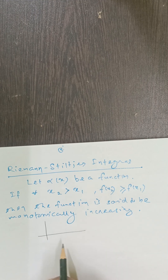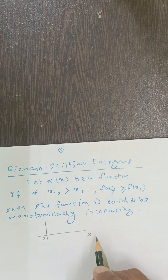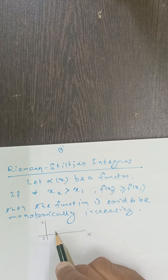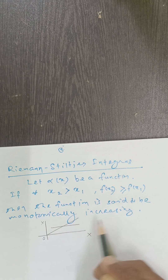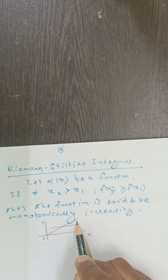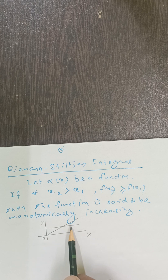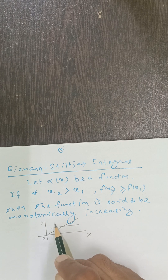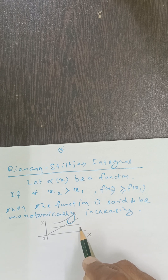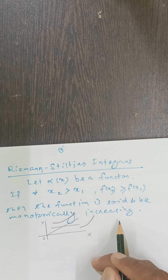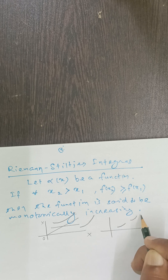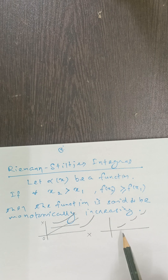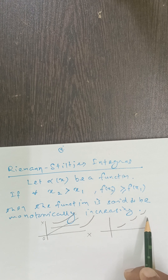What will be the graph of this function? Suppose this is the origin, this is the x-axis, this is the y-axis. This might be one graph — here, the function is not decreasing and the function values are equal in some places. Or this may be the graph where for every x2 greater than x1, the functional value is greater and not decreasing. Similarly, this might also be a graph where the function is discontinuous but not decreasing — this is monotonically increasing.